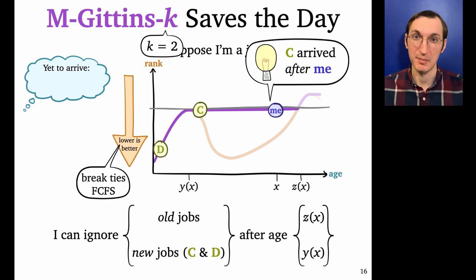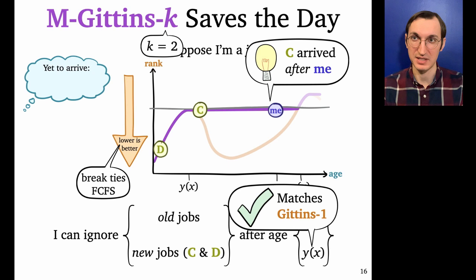And so it turns out that I can actually now ignore new jobs as soon as they pass age Y of X. Because after age Y of X, they're going to be stuck on this plateau with me. We're going to be tied, but I'm going to win the tiebreaker. And so this gives us exactly what we wanted because it matches Gittins-1.